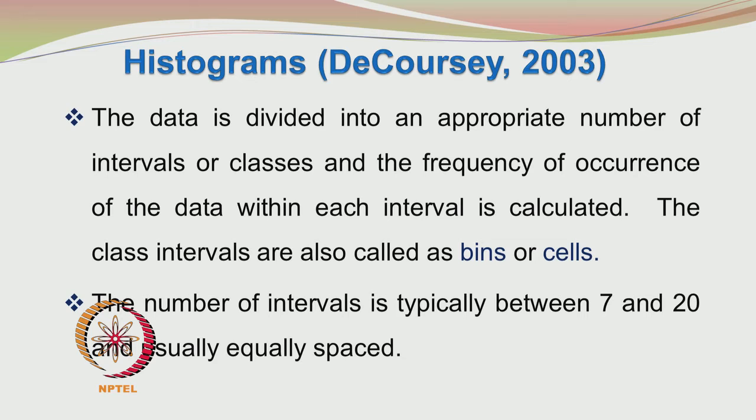The procedure for doing histograms is given in several books; I am following de Courcy 2003 here. The data is divided into an appropriate number of intervals or classes, and the frequency of occurrence of the data within each interval is calculated. The class intervals are also called bins or cells. For example, if you have the distribution of marks varying from 0 to 100, you may create bins of size 10 and for every 10 marks find the number of students falling in that category.